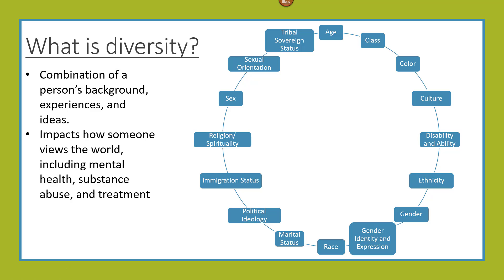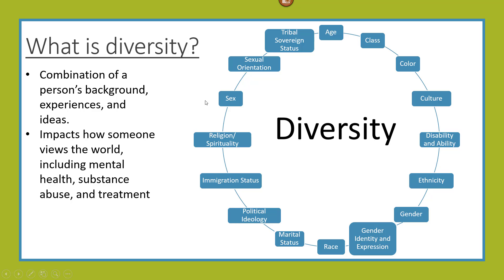Socioeconomic class, spirituality, political affiliation, or sexual orientation are also aspects that may be considered part of a person's diversity. Other aspects may be an individual's level of ability in different situations, their gender identity, their marital status, or even their own career path. A person may also define themselves by their immigration status, tribal affiliation, or the school they attend. As you can see, there are many, many aspects of diversity.